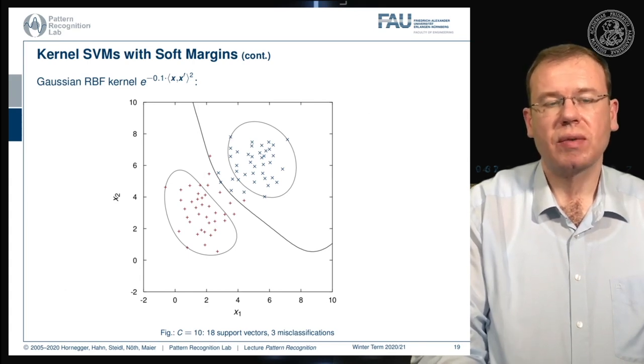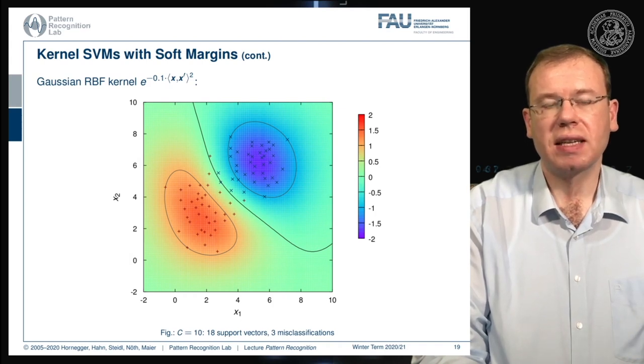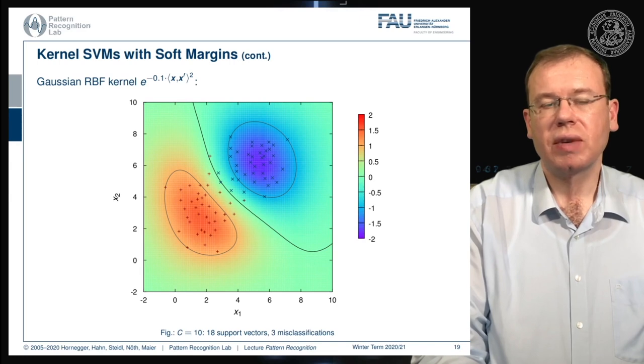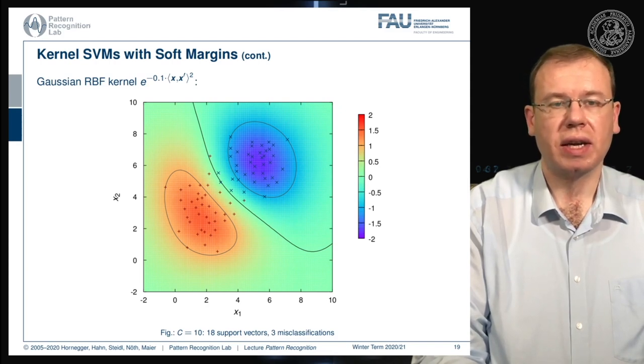And of course, we can then also color code the output of our decision boundary. You see that at the zero level set the actual decision boundary is. And we then also see that the one class here is then indicated in blue, and the other class is indicated in red.